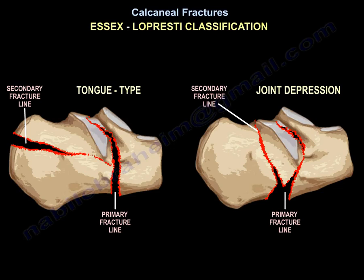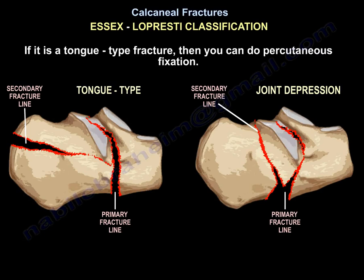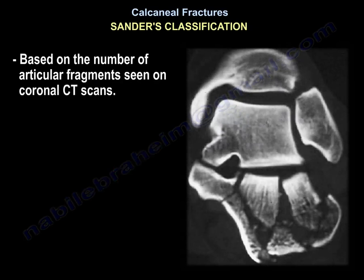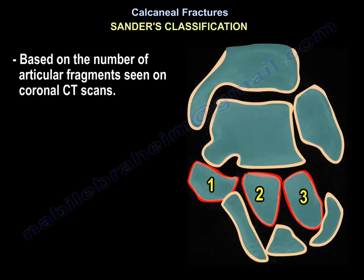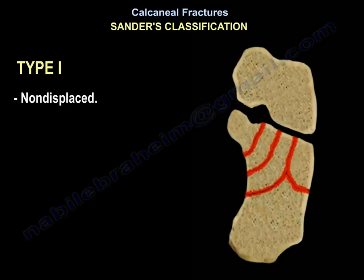This is the Essex-Lopresti classification. If it is a tongue-type fracture, percutaneous fixation can be done. However, Sanders has its own classification, which is based on the number of articular fragments seen on the coronal CT scans.